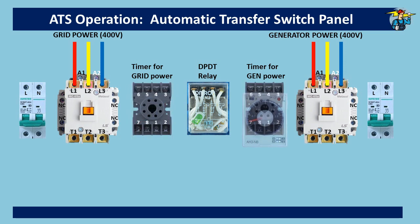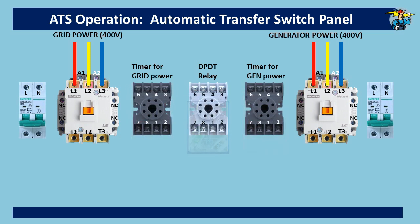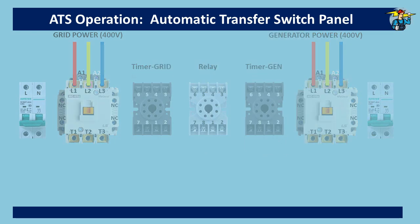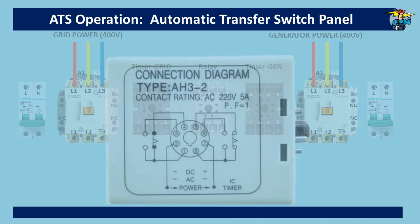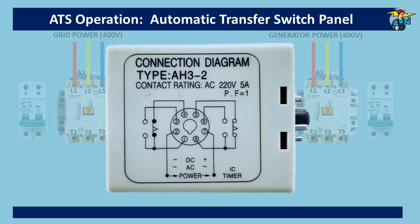When you take timers and relay out of their bases, you will see numbered ports. This picture shows how the positions are numbered for the normally open and normally closed positions, the common points, and the power supply points. Power connection for the relay or timer is given through points 2 and 7.